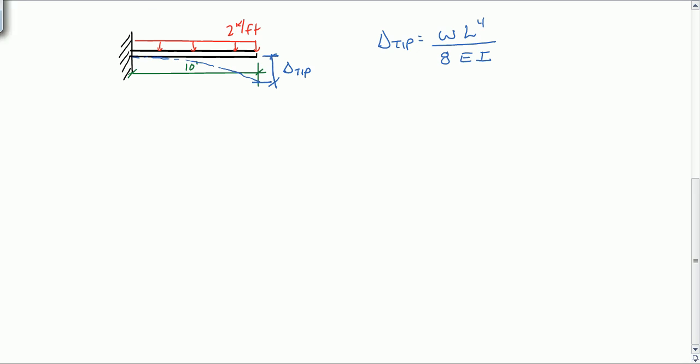So in this case, we've got our different parameters. W is 2 kips per foot. L is equal to 10 feet. E, again, we need to know the material. So let's assume steel again in this example. 29,000 KSI for steel. Let's use the same beam as we used before. I is equal to 612 inches to the fourth. That's a W18 by 40.